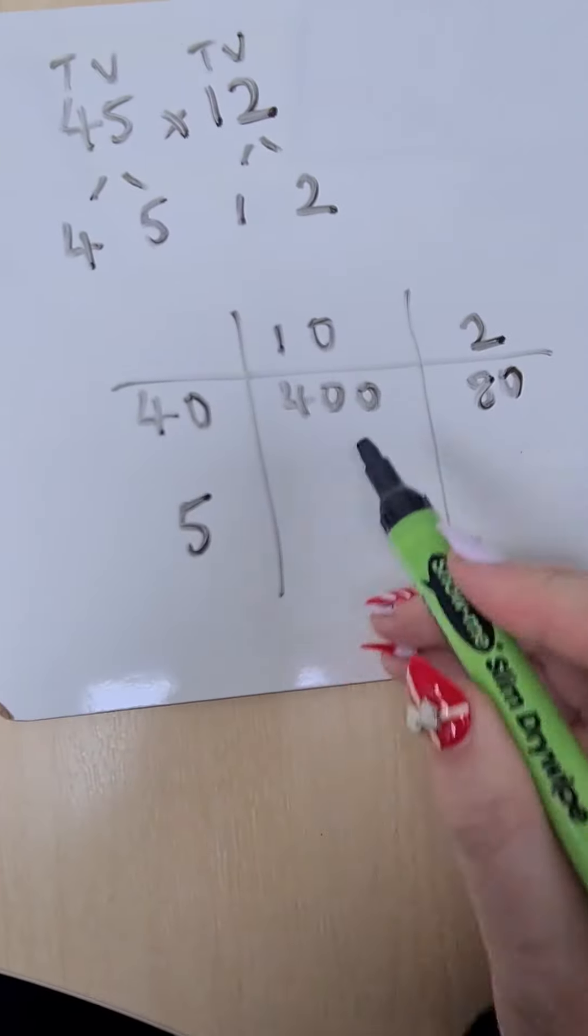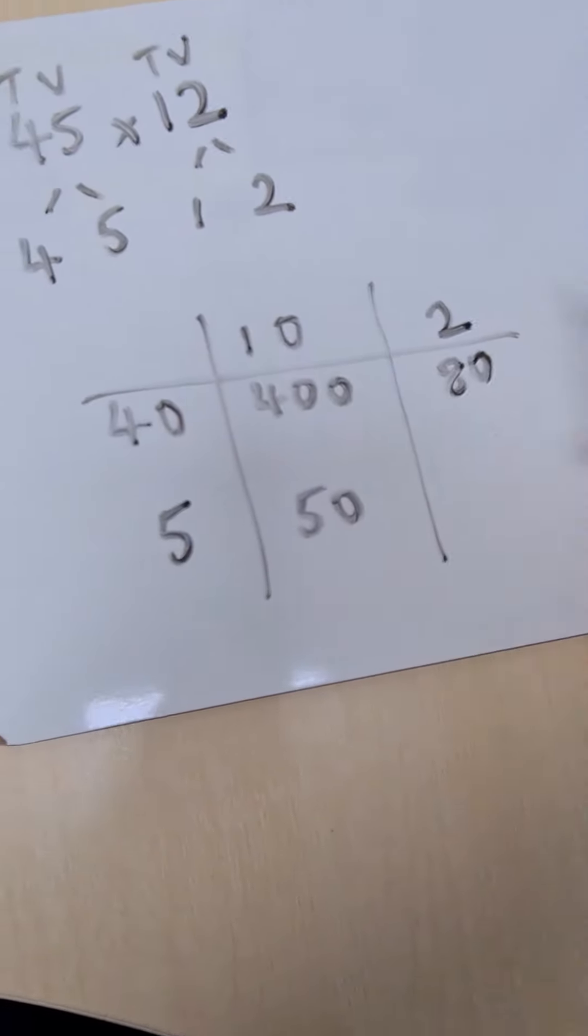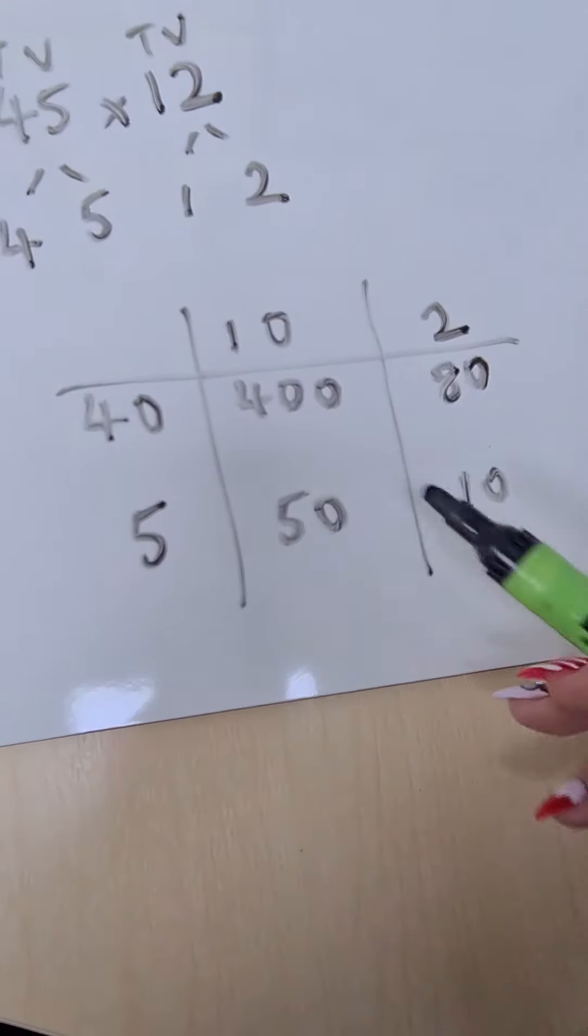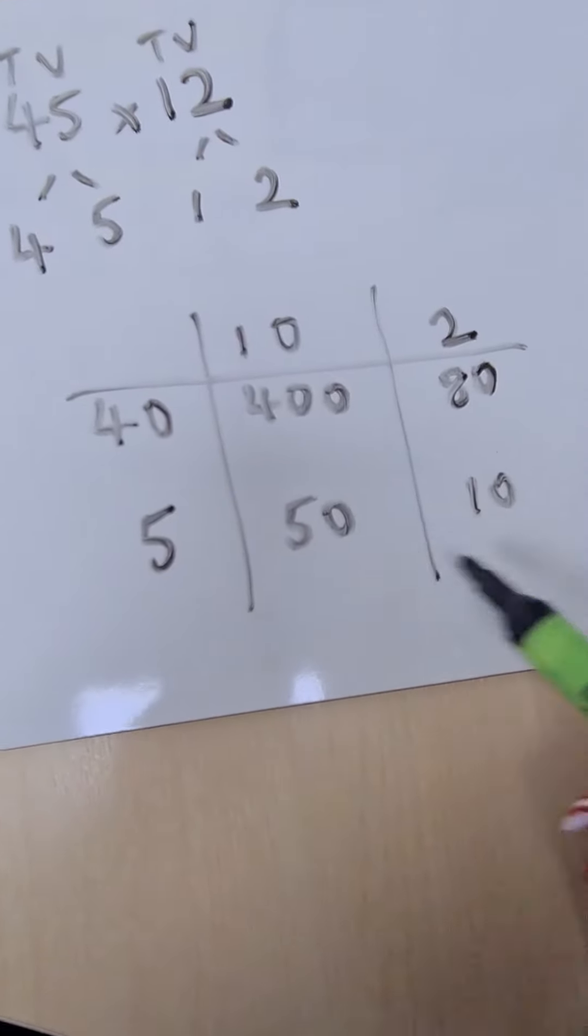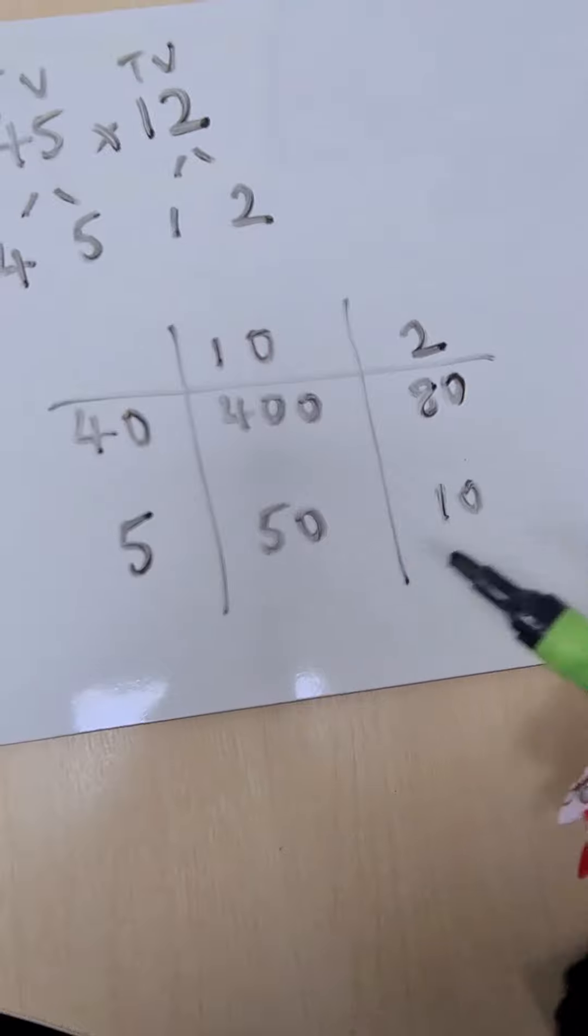We then move on to 5 times 10 and 5 times 2. We now have four answers that we need to recombine. We need to add them all together to find the total.